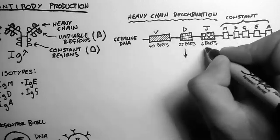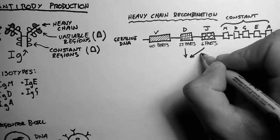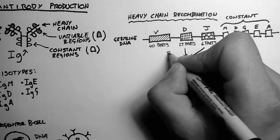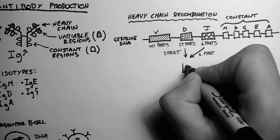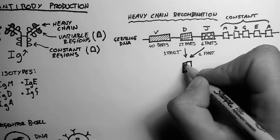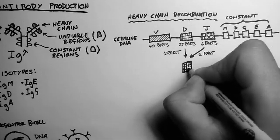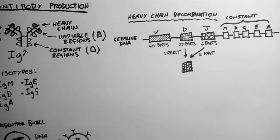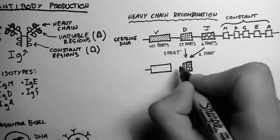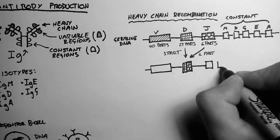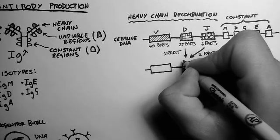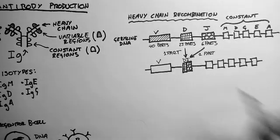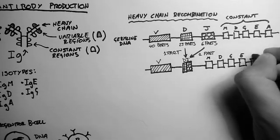Now initially, one part of each of the D and the J regions get selected, and the rest get cut away. So we're left with just one part of the D region sitting right next to one part of the J region. And we call this the D-J recombination. So the M, D, G, and A still sit on the end.